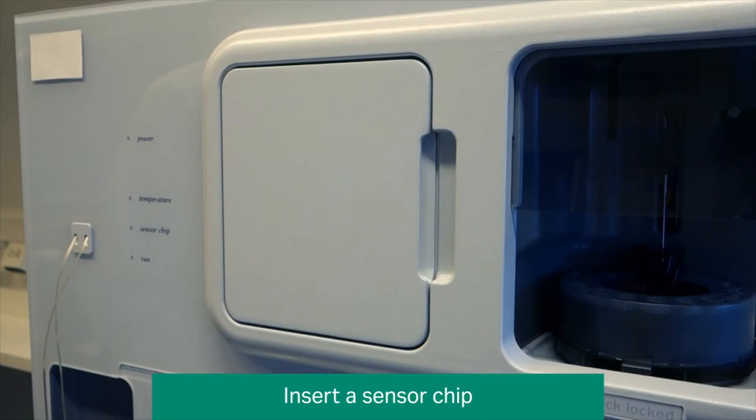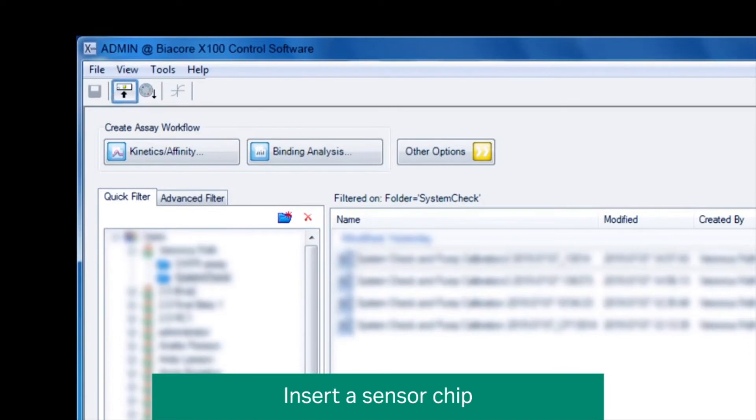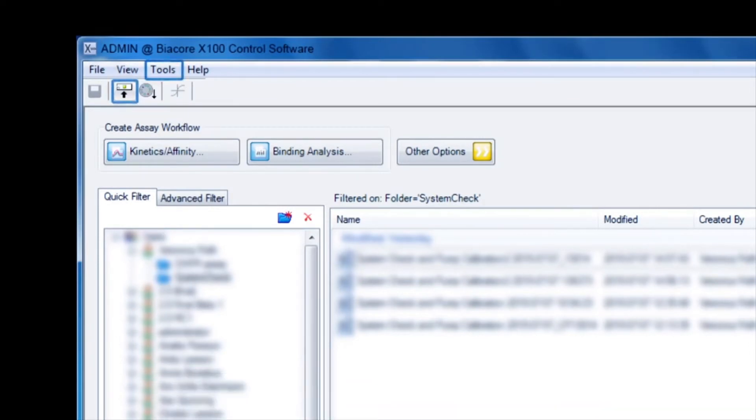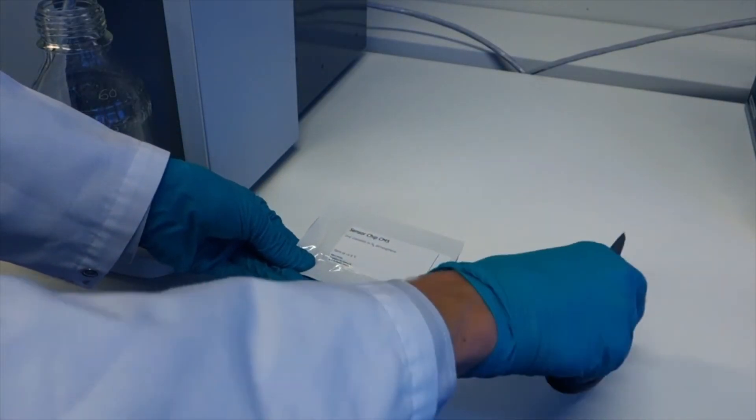To dock a sensor chip, open the front door of the instrument. Click the Undock chip icon or select Undock chip from the Tools menu. Remove the chip from the packaging envelope as follows.